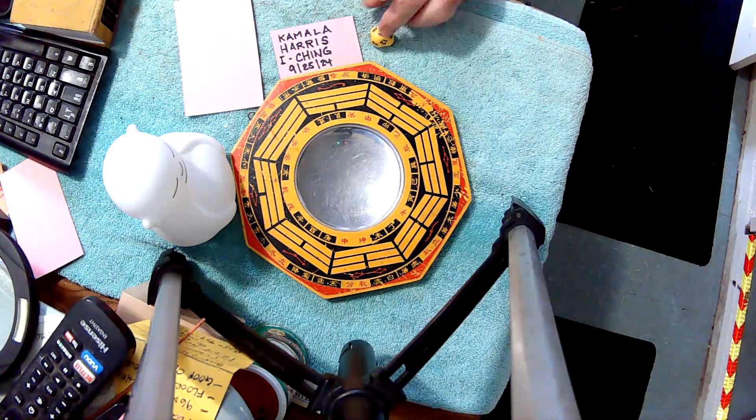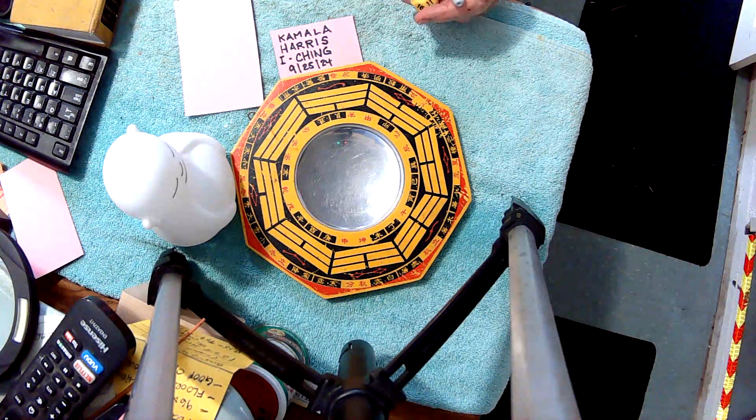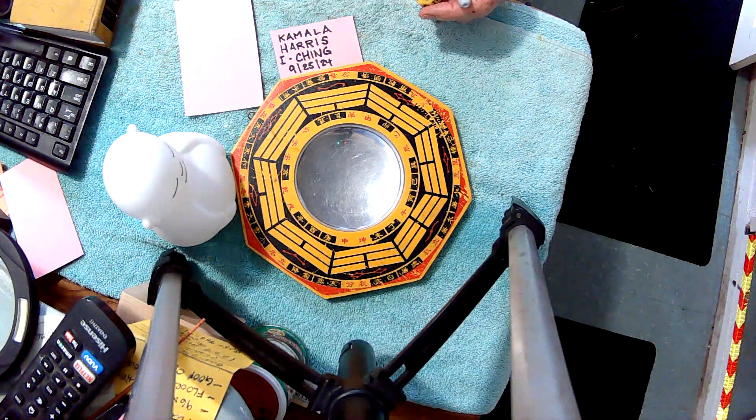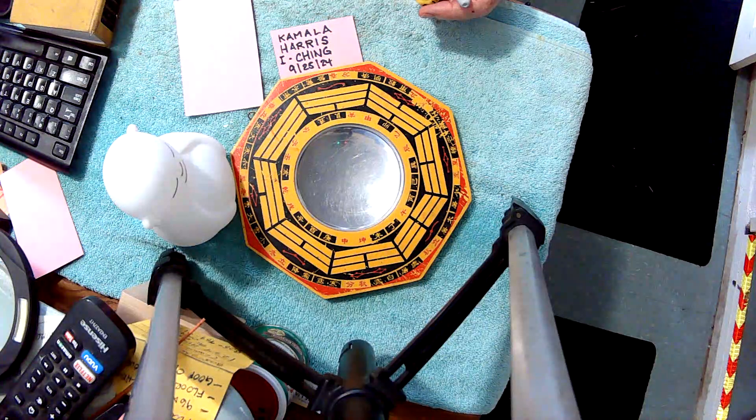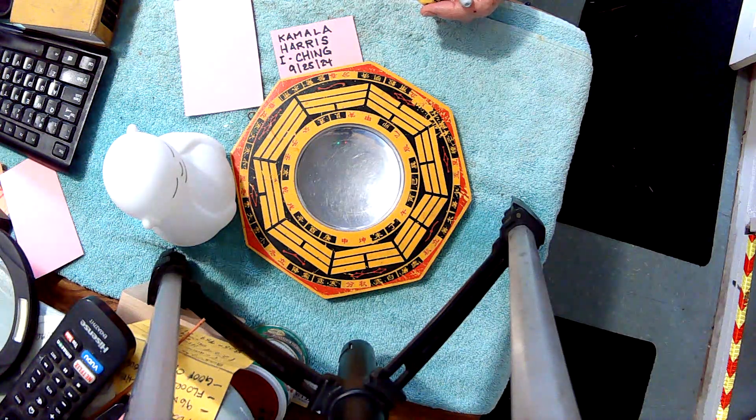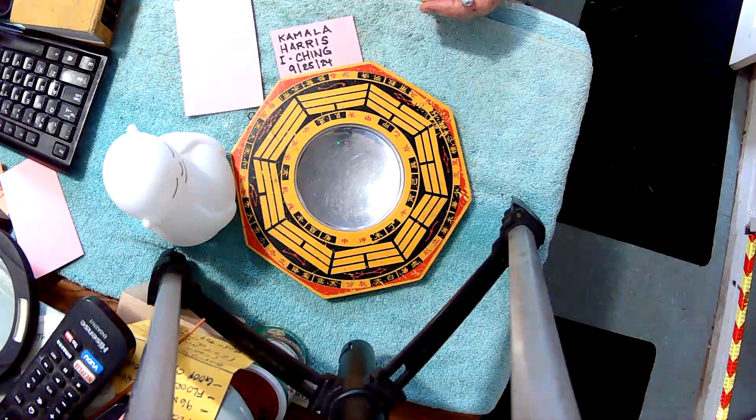We're using the Yarrow Stock Method, which has a series of probabilities for yin, yang, changing yin, and changing yang of 1, 3, 5, and 7. All prime numbers. I don't know why, but that's just the way it is.